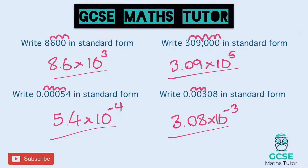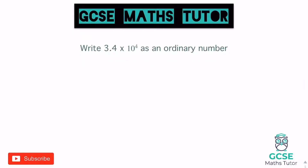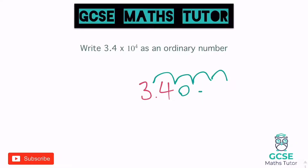Now let's look at some different questions — going back the other way. Write 3.4 times 10 to the 4 as an ordinary number. We've got 3.4, and since it's a positive power of 4, it's going to be a big number. We hop the decimal 4 places to the right: 1, 2, 3, 4. Filling in the zeros gives us 34,000, and that's the answer as an ordinary number.